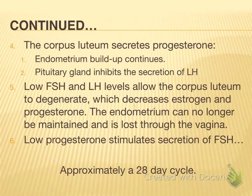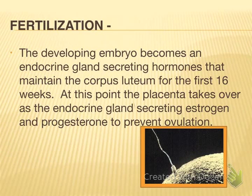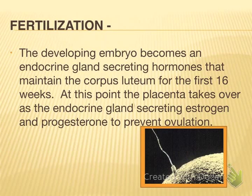This whole process takes approximately 28 days. The exception is fertilization: if a sperm fuses with the egg, the developing embryo becomes an endocrine gland itself, secreting hormones that maintain the corpus luteum for the first 16 weeks, which in turn maintains the endometrium. Once the fetus reaches 16 weeks, the placenta is fully formed and takes over as the endocrine gland, preventing ovulation, preventing shedding of the uterine lining, and protecting the developing fetus by producing estrogen and progesterone.